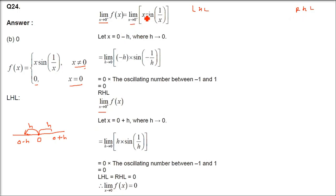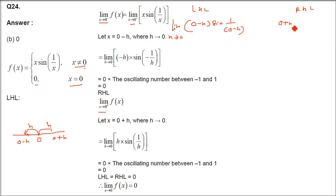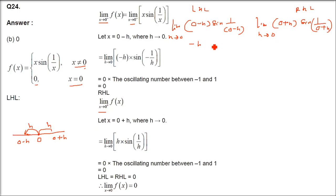As x tends to 0 minus, we put x = 0 minus h, giving (0 minus h)·sin(1/(0 minus h)), and we change the limit to h tends to 0. Similarly for the right hand limit: (0 plus h)·sin(1/(0 plus h)). So we get minus h·sin(minus 1/h) for LHL.